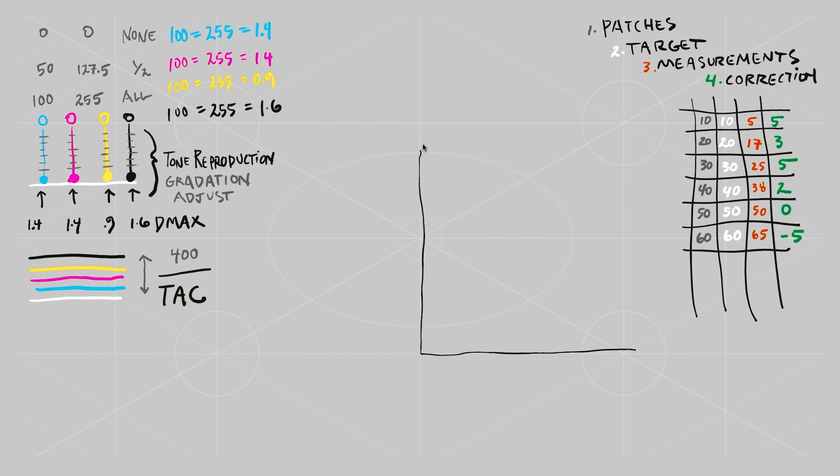So that's the table of what we wanted, and what we got, and the corrections that you have to produce.